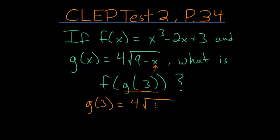We have 4 times the square root of 9 minus 3, and this equals 4 times the square root of 6. The square root of 6 has factors of 3 and 2, which are each prime, so this can't be simplified. So 4 root 6 equals g of 3.